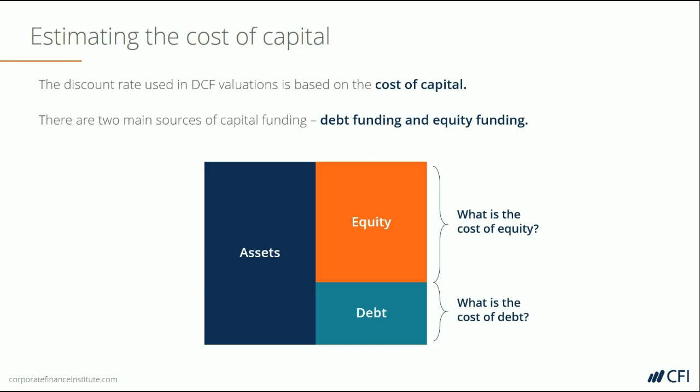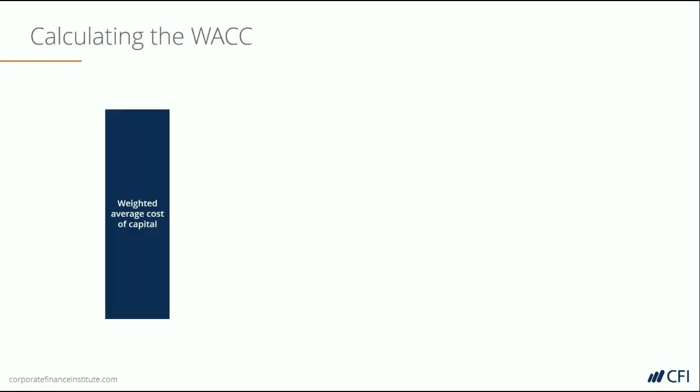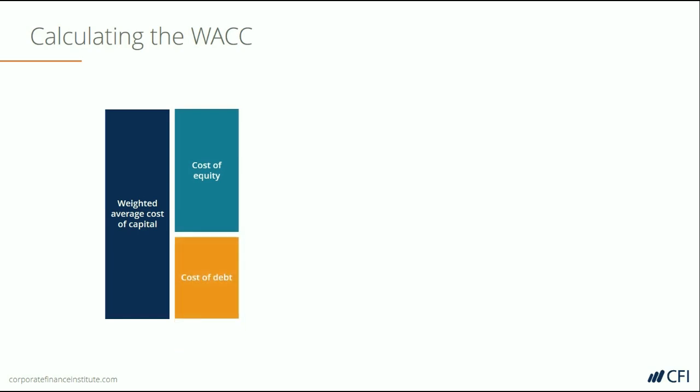Let's look at a breakdown of how this works. Let's take the weighted average cost of capital for a company and break it down into its various components. The first distinction is separating the weighted average cost of capital into the cost of equity and the cost of debt. They will be weighted depending on how much of the company's capital consists of equity and how much consists of debt.